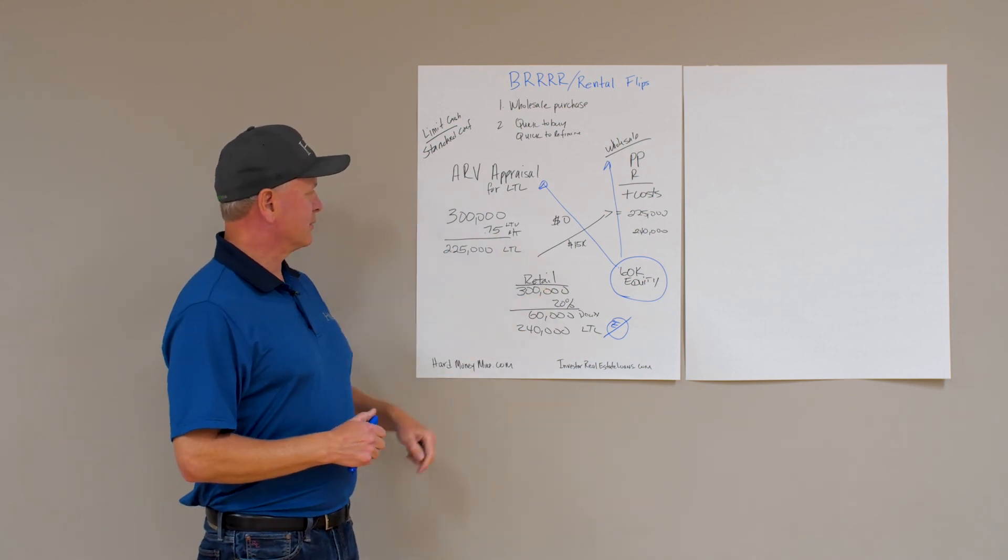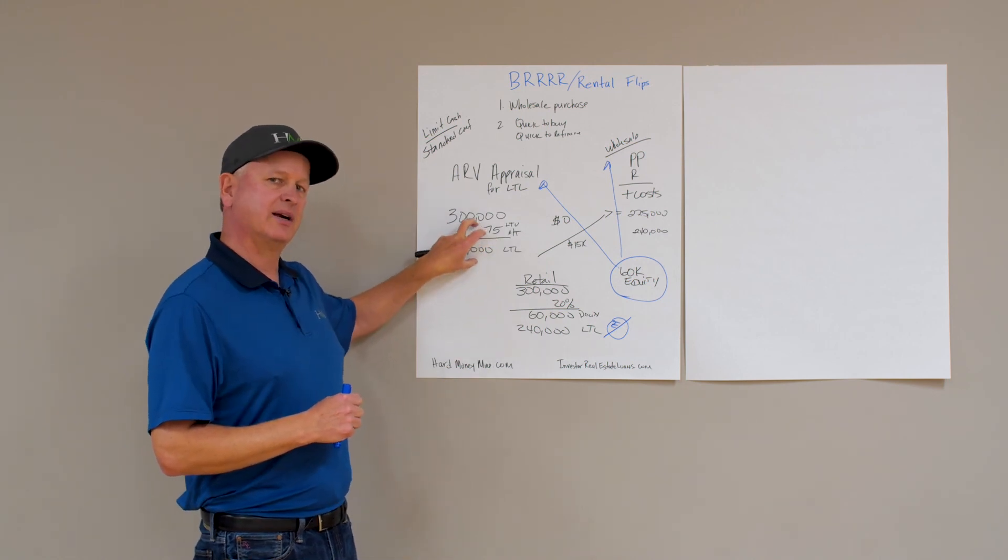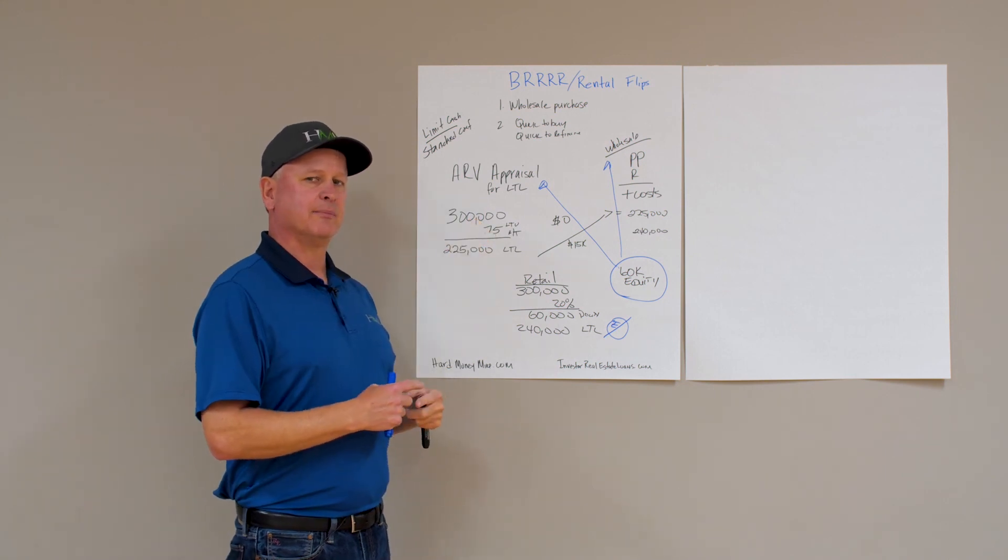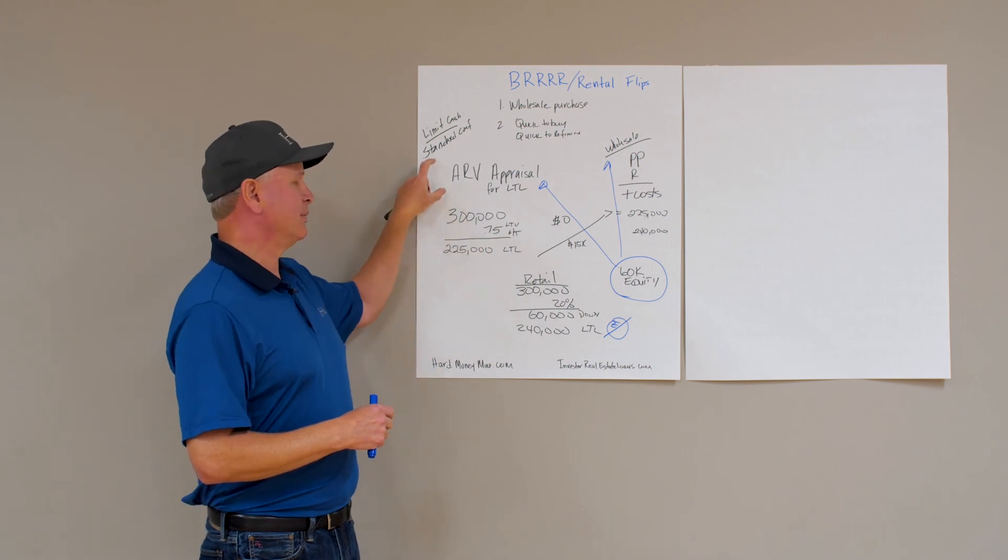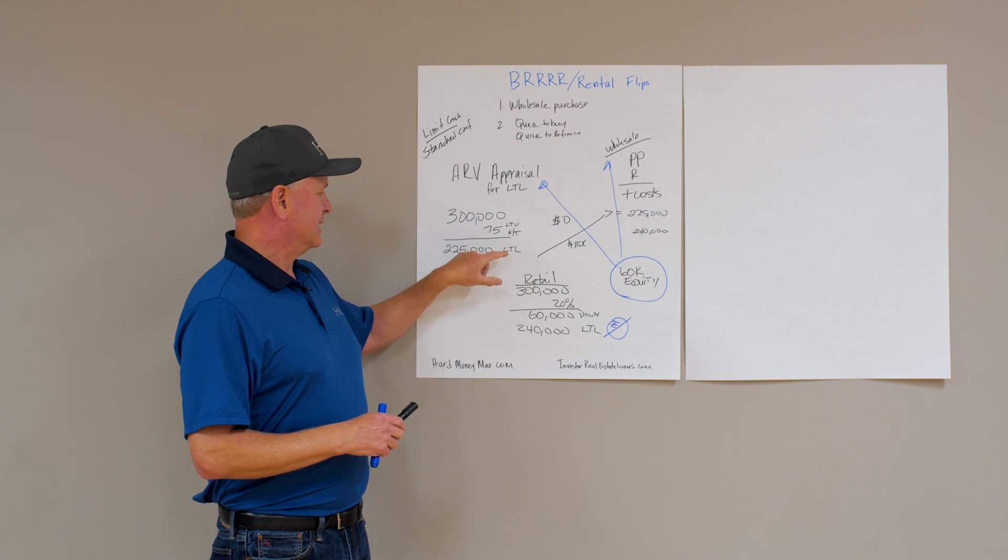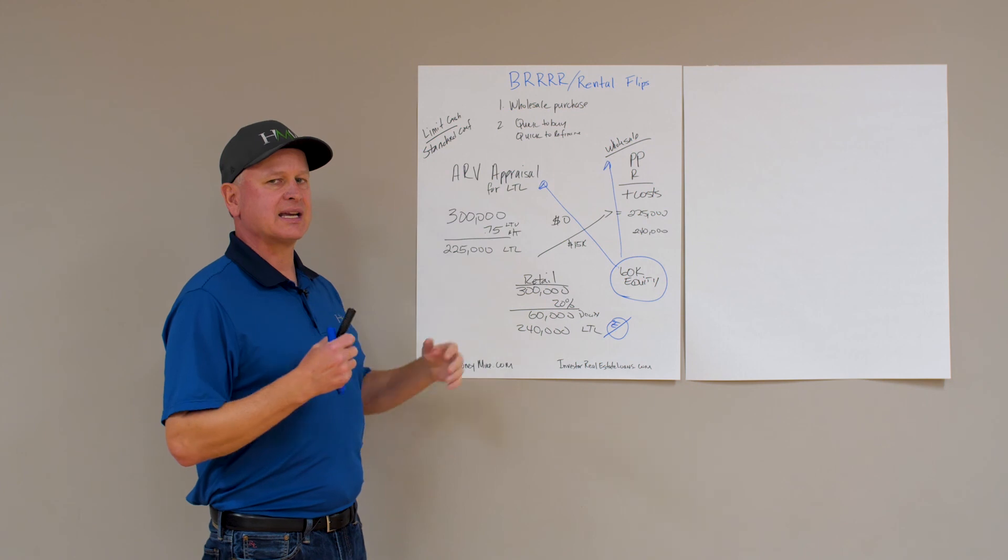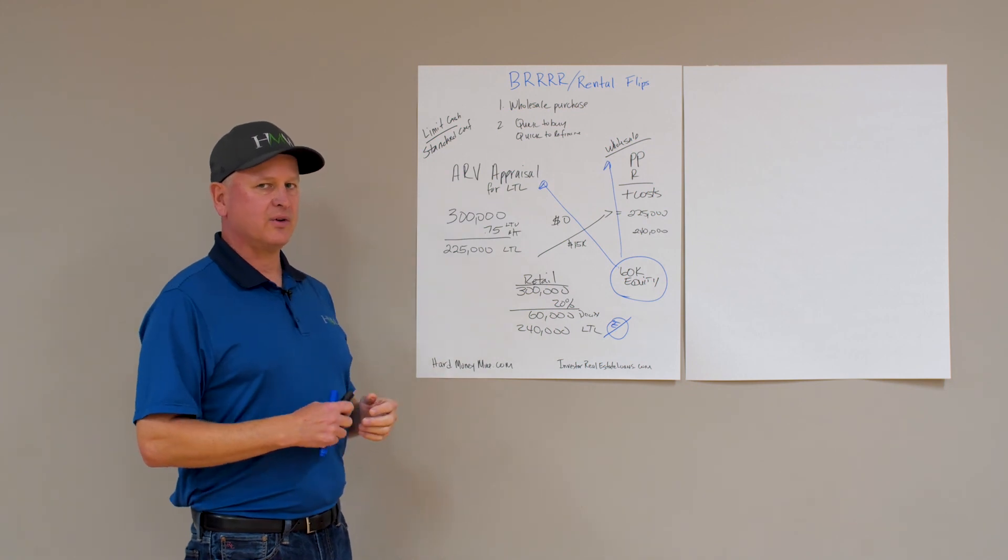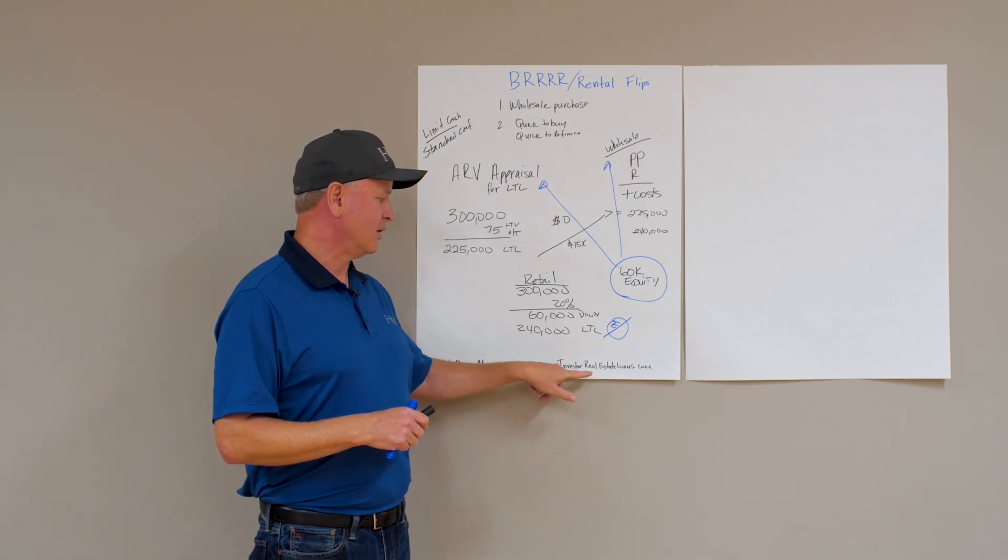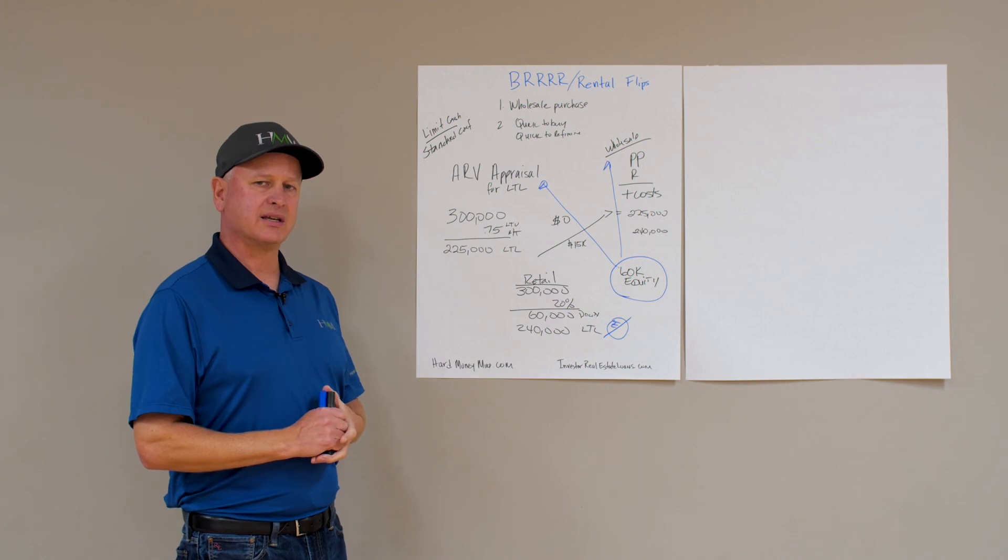In the next video, we're going to make sure we set up this loan correctly, because if this loan is set up incorrectly as a cash-out instead of a rate-and-term, you're going to lose on maximizing your loan. You'll have more money in, and the costs will be higher. So if you have any questions, please check out our websites at hardmoneymike.com or investorrealestateloans.com and drop us an email. Thank you so much for your time.